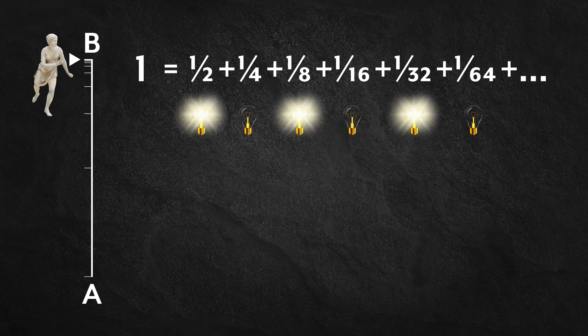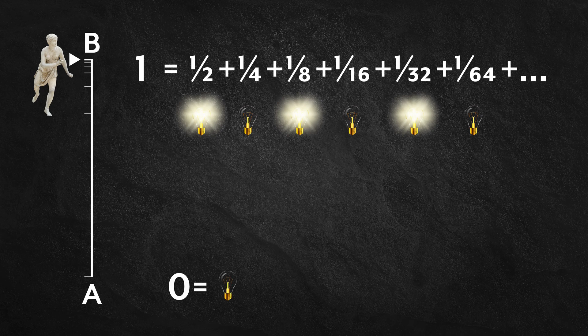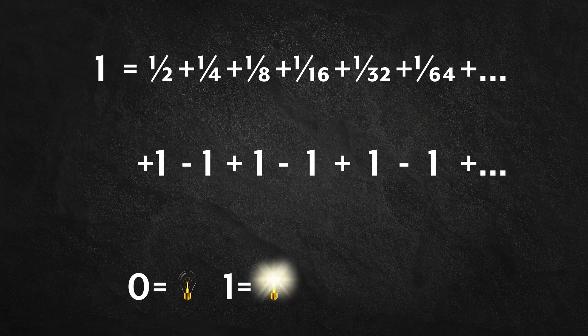To express this mathematically, we can say that zero means off and one means on. So we add one to turn the light on and subtract one to turn the light off. This infinite series does not converge to a value. It has no sum.